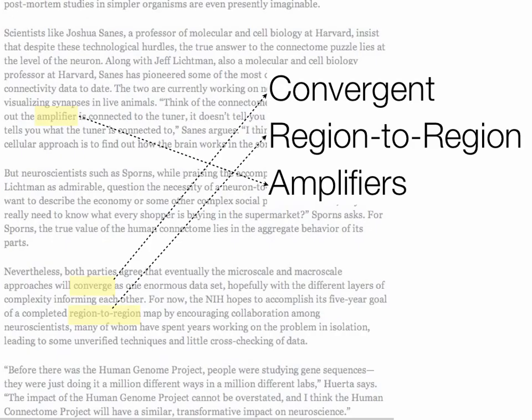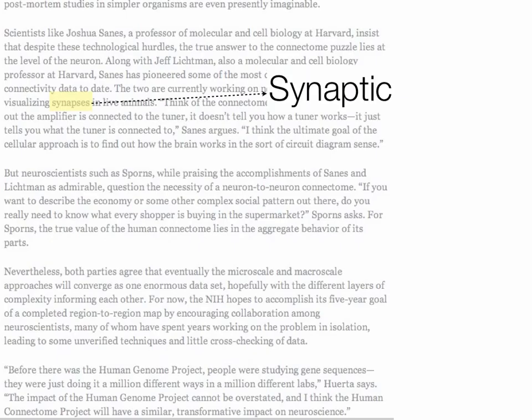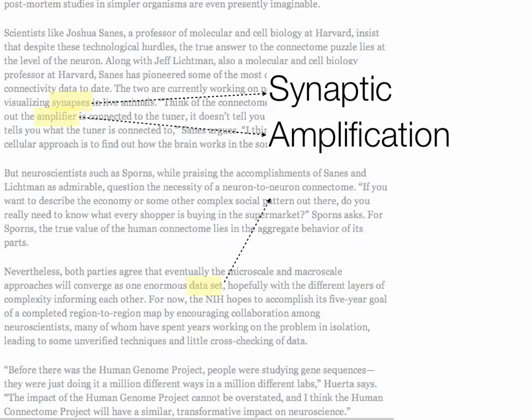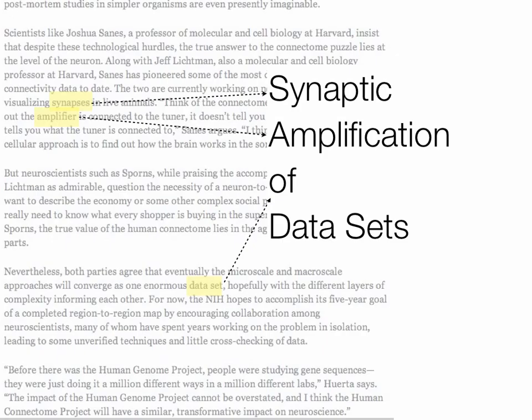We can change the form of words to match what we need. So we changed 'converge' to 'convergent' to make it sound more like a term. All the words are just material that you can manipulate in any way, shape, or form to fulfill the needs of your remix. Let's do one more: synaptic amplification of data sets. Notice how we inserted the word 'of' and changed 'data set' to 'data sets' in order to create something that looks like a term.